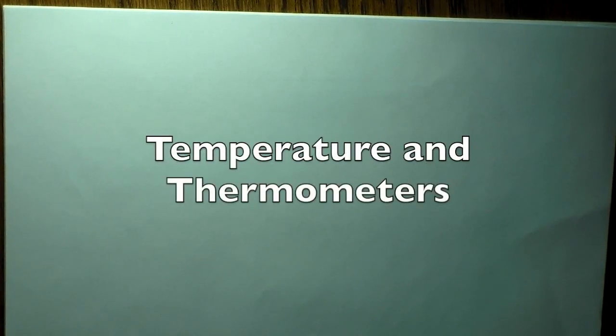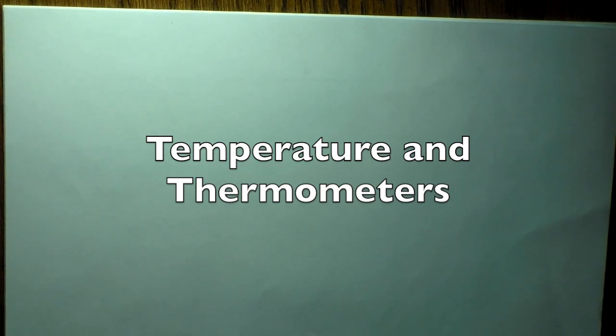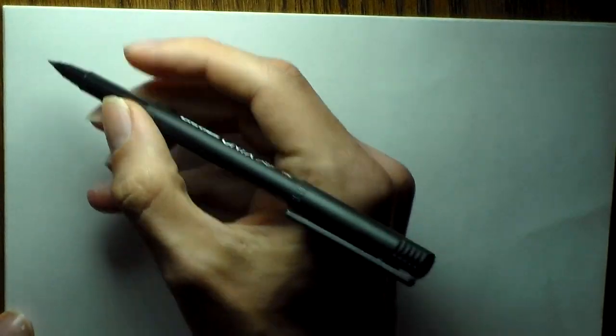Today we're going to be talking about the temperature scale and thermometers. There are two main temperature scales that we're all familiar with: the Fahrenheit scale and the Celsius scale. To see how these are both related, we'll draw a simple little graph here.